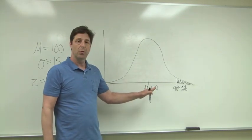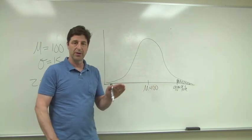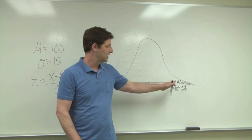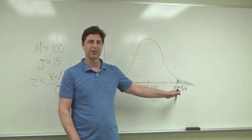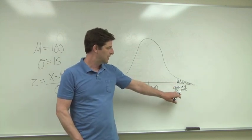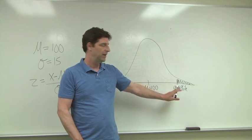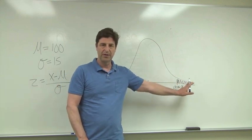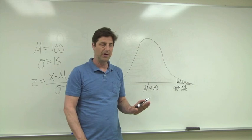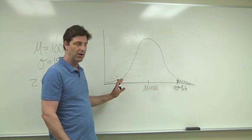And we want to know what is the score, this would be the raw score, that marks the 90th percentile of this distribution. The 90th percentile is going to be the point at which 10% of the distribution will fall above and 90% fall below.